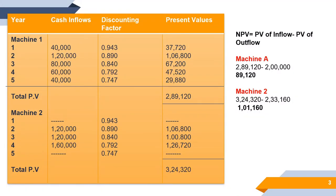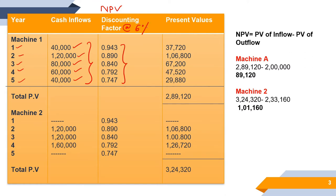Let's look at the calculation of NPV, that is Net Present Value. For Machine 1 we have five years: first, second, third, fourth, and fifth year. The cash inflow data from the question — 40,000; 1,20,000; 80,000; 60,000; and 40,000 — is entered. The discounting factor shown is as per 6%, calculated using 1 divided by 1.06. Pressing equals gives the year-1 factor, then pressing equals again gives 0.890.